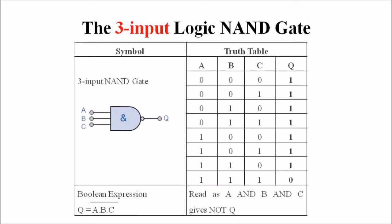The second and most common type is the three-input logic NAND gate. Here we can see three inputs: A, B, and C, and Q is the output. The boolean expression is Q is equal to A dot B dot C, the whole bar, and it is read as A and B and C gives not Q. The truth table for this three-input NAND gate is A dot B dot C, the whole bar, gives Q.